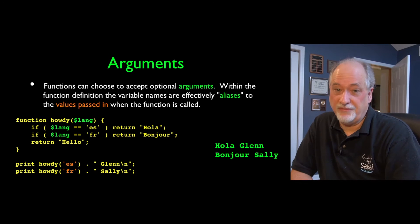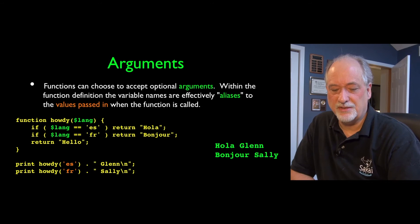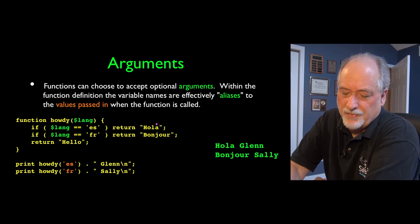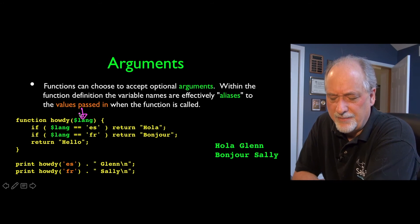Arguments are simply variables that are, they're sort of not really real variables. They're placeholders that are aliases in a sense. So in this particular bit of code, if we're going to, we're going to take the language in as a parameter.